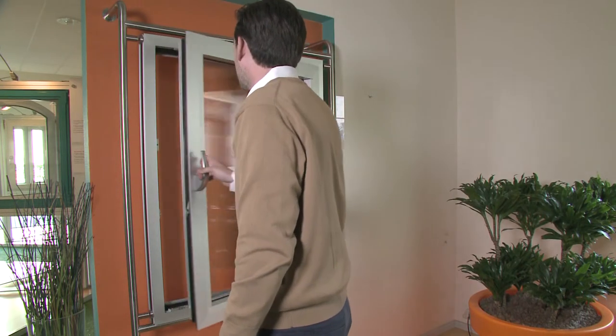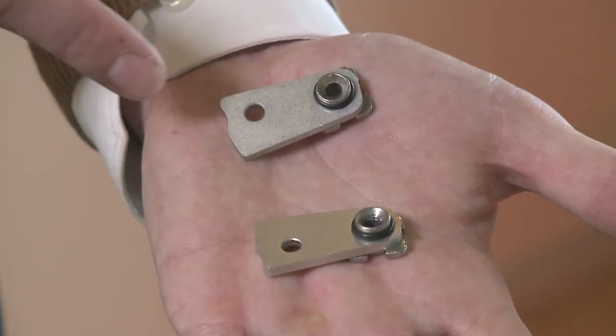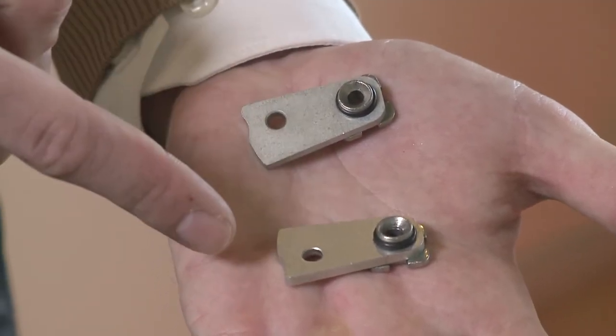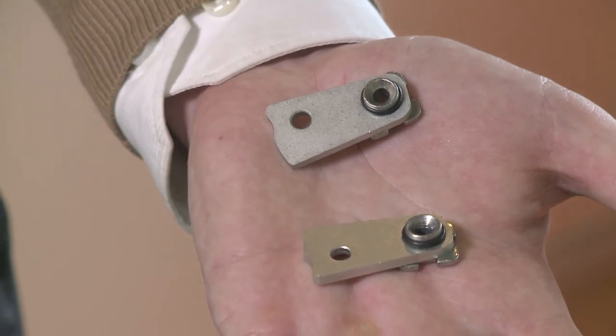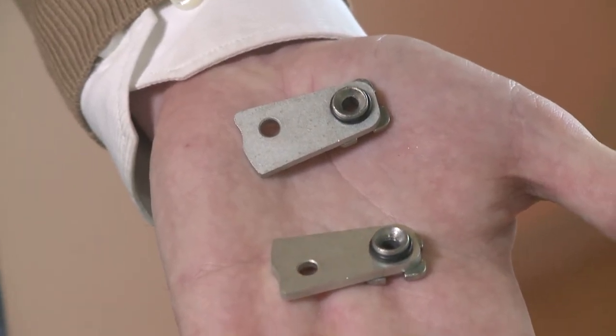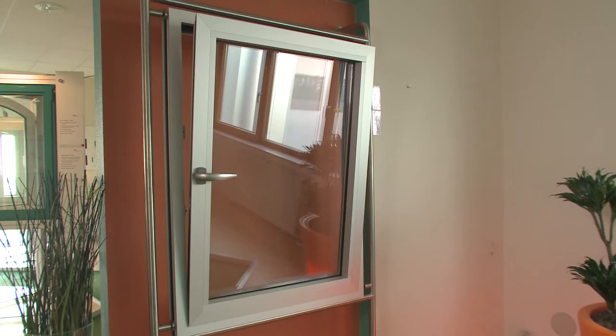And the window can be opened in turn mode. The travel restrictor is available in left- and right-handed versions. To find the correct one for your window, the handing is designated by the hinge side of the window when viewed from inside the building.